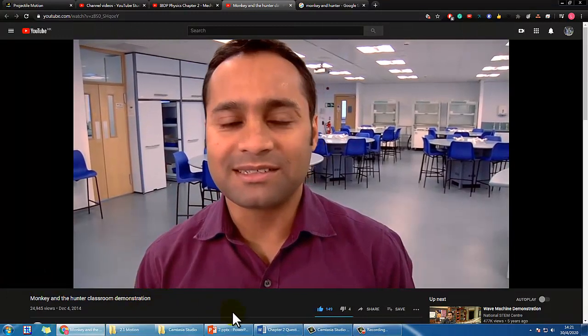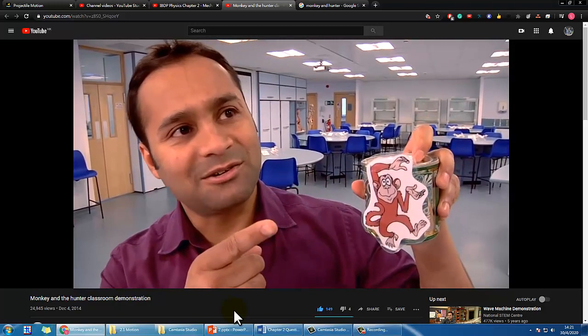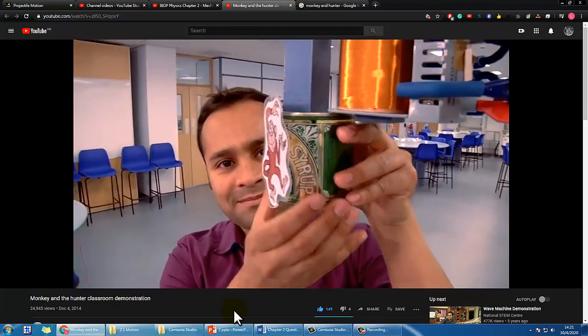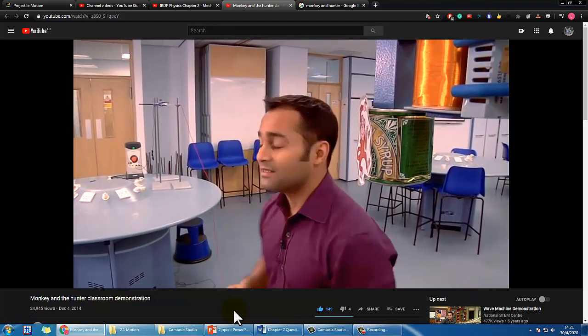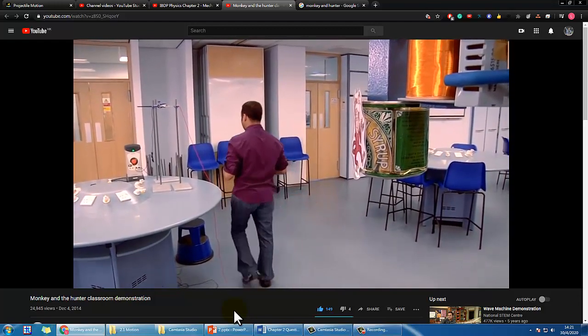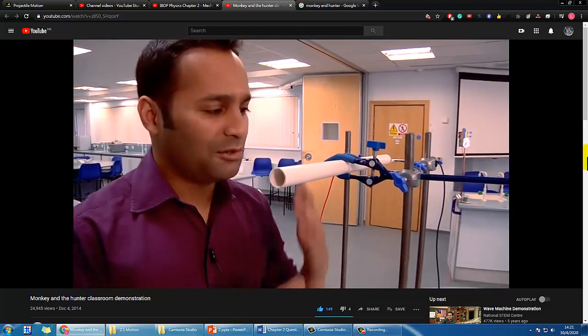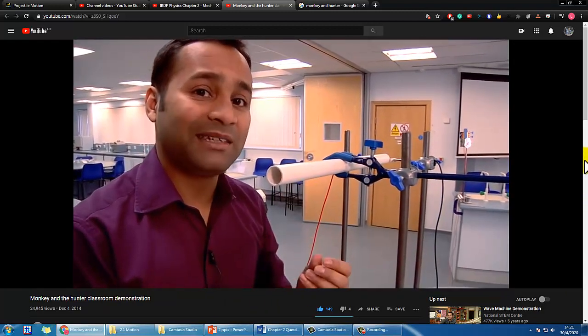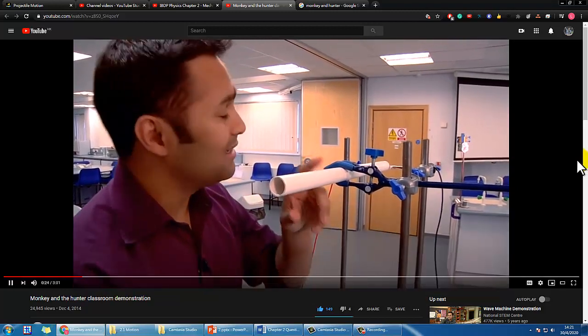I'm going to show you a classic physics demonstration that's been around for over a hundred years. It's called the monkey and the hunter because it features a monkey sitting in a tree and across the way from him in another tree a hunter. Now according to the story, and remember it was written by physicists, the hunter is in a tree at exactly the same height as the monkey and pointing his gun direct.